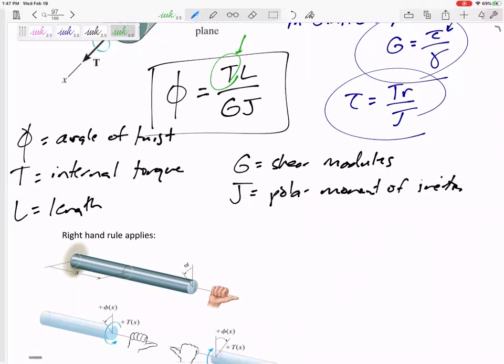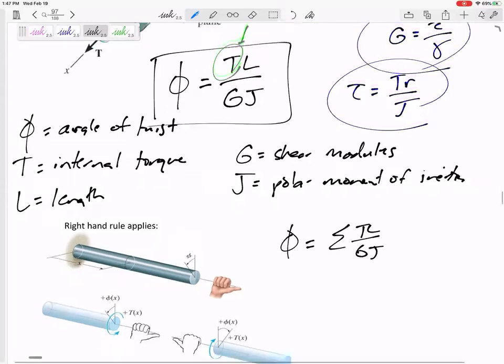What if we have different T's, like that last problem? We've got a torque of negative 100 in this section, positive 150, positive 150, negative 30, positive 70. If we want to find the total angle of twist, we might have to sum up all of these T L over G J's. T L over G J at this section, T L over G J at that section, T L over G J at that section.